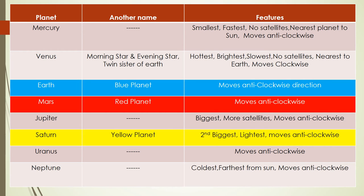I have given a list of the planets with their features and alternate names in a table format for easy understanding. This table has three columns: planet name, alternative name, and features. First — Mercury. Its features: it is the smallest planet, it is the fastest, there are no satellites, it is the nearest planet to the sun, and it moves in anti-clockwise direction.